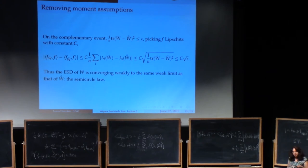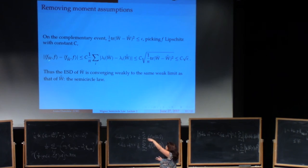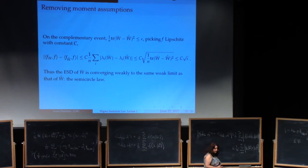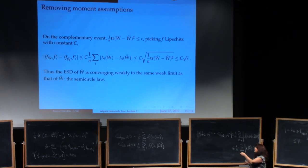But of course epsilon has been chosen arbitrarily. So what have we shown? We have shown that no matter how small you choose epsilon, you can prove that the difference between these two numbers on a set of probability going to 1 with epsilon, the difference between these two numbers goes to 0. But that's the same as saying that the ESD of F of W is converging, if this is converging weakly in probability to sigma, then so is this, because the inner products go to the same numbers.